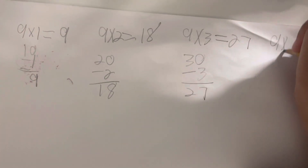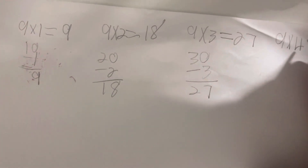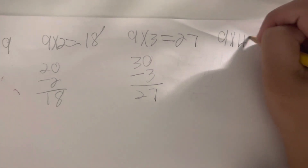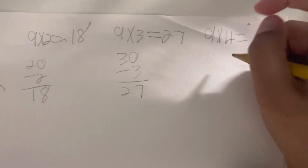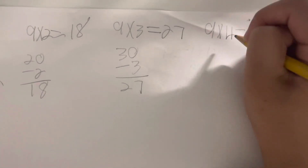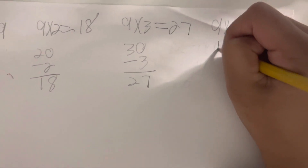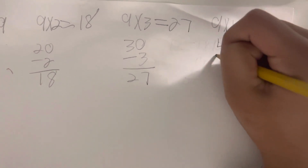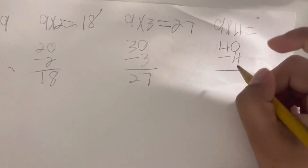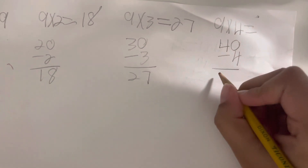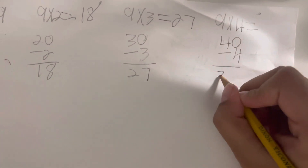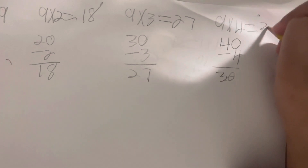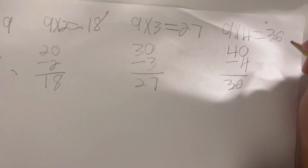9 times 4 equals. You copy the 4 and add another 0, then minus the same number. It equals 36. The answer is 36.